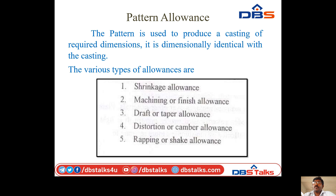A pattern is used to produce a casting of required dimension. It is dimensionally identical with the casting. In patterns, there are various types of allowances: shrinkage allowances, machining or finish allowances, draft or taper allowances, distortion or camber allowances, and wrapping or shake allowances.